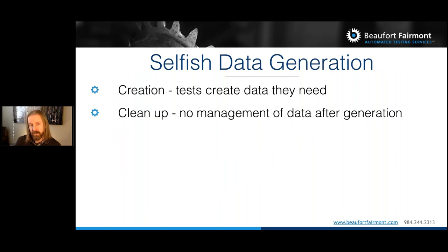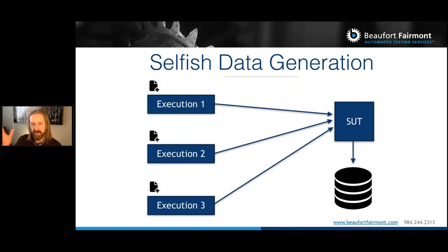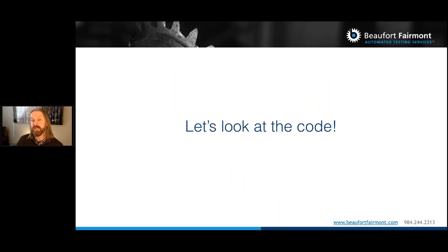Selfish data generation is the idea that tests create exactly the data they need. If you create a unique user each time you run the test, it doesn't matter if the password changes because the next run has a new user and new password. It's called 'selfish' because we don't care about any other test cases or how our data creation impacts the system. We create data, use it for our own needs, and don't care how anyone else is affected.